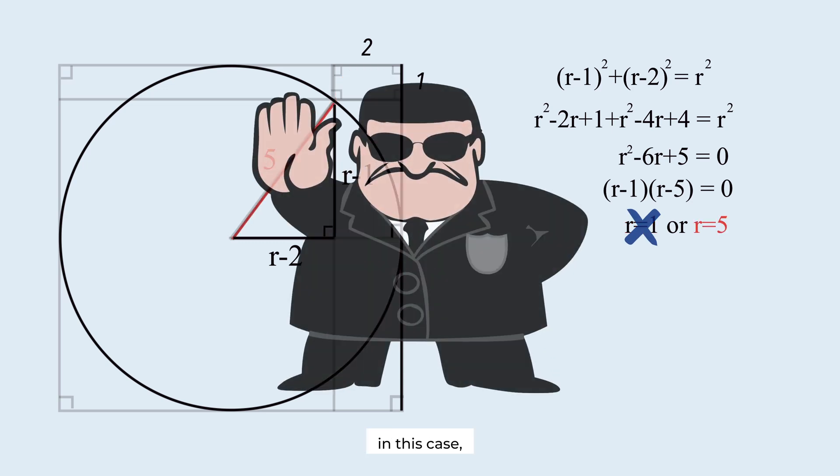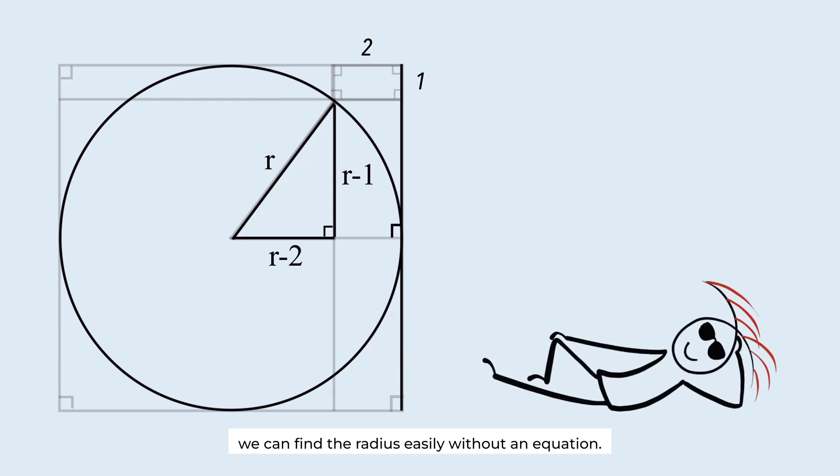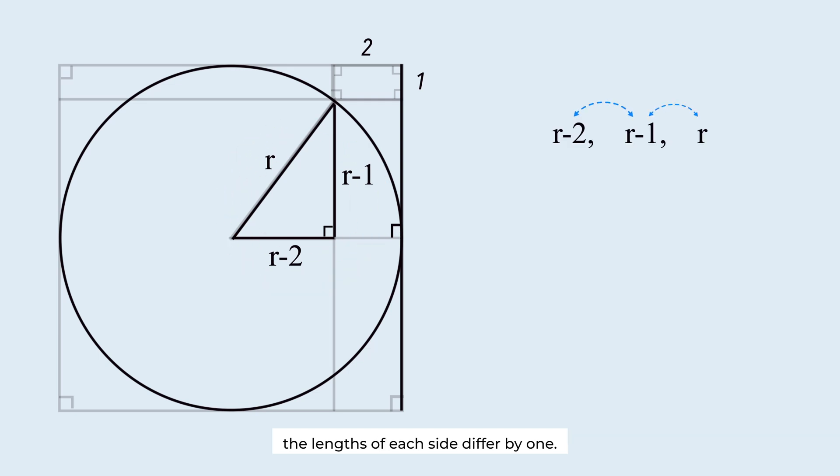Wait. In this case, we can find the radius easily without an equation. Look at the relationship between the three sides of the right triangle. The lengths of each side differ by 1. There's only one set of numbers that satisfies the Pythagorean theorem with such a relationship. These numbers are very familiar to us. 3, 4, 5. The radius is 5.